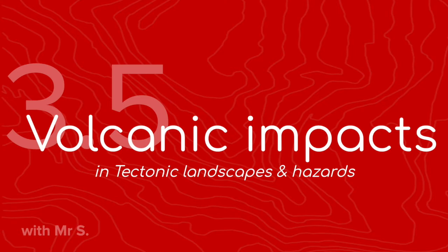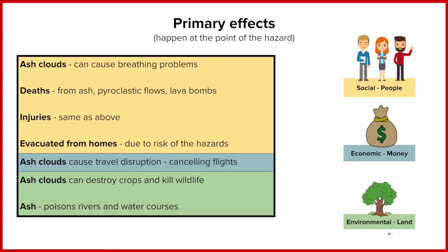Volcanic impacts are a consequence of volcanic eruptions. These impacts or effects are split into primary impacts, which happen at the point of the hazard, and secondary impacts, which happen after the hazard. These effects can also be split into social, economic, and environmental.